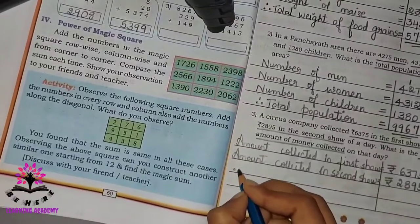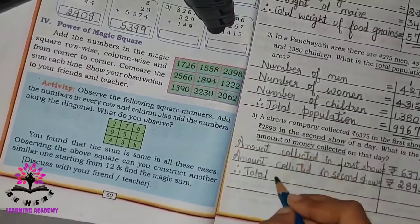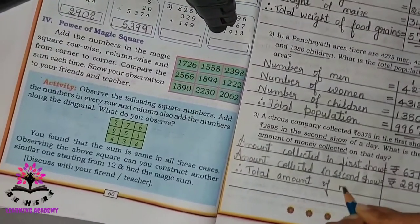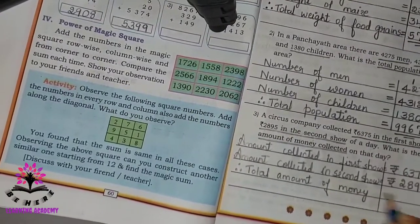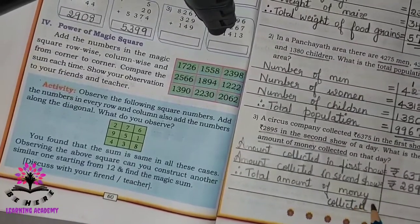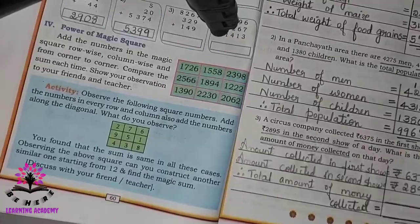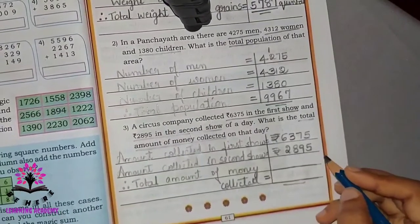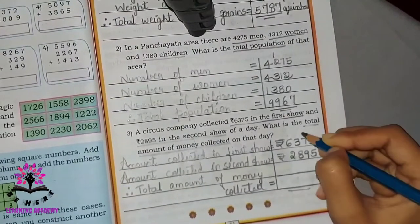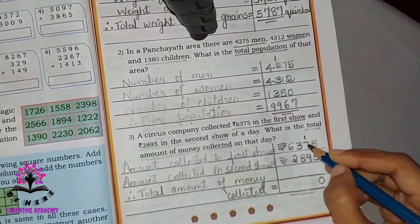Therefore, total amount of money collected is equal to... 5 plus 5 equals 10. 7 plus 1 is 8, 8 plus 9 is 17.